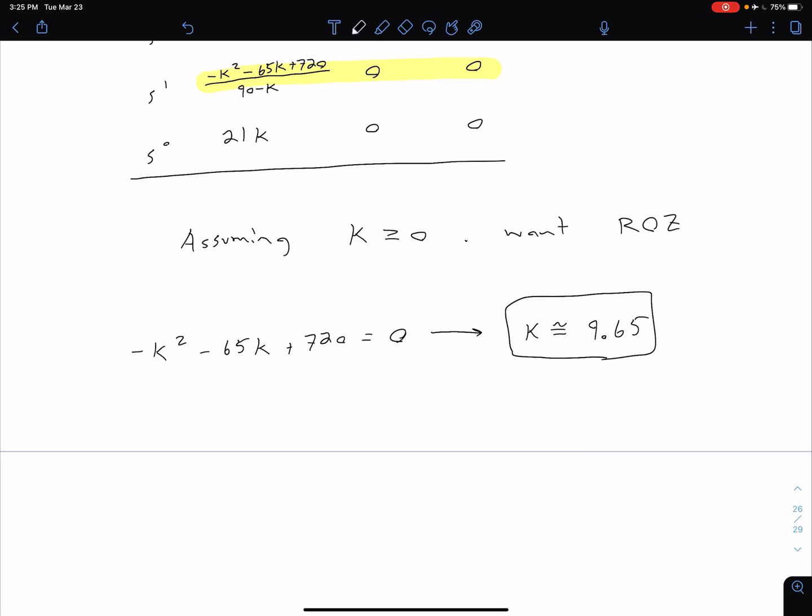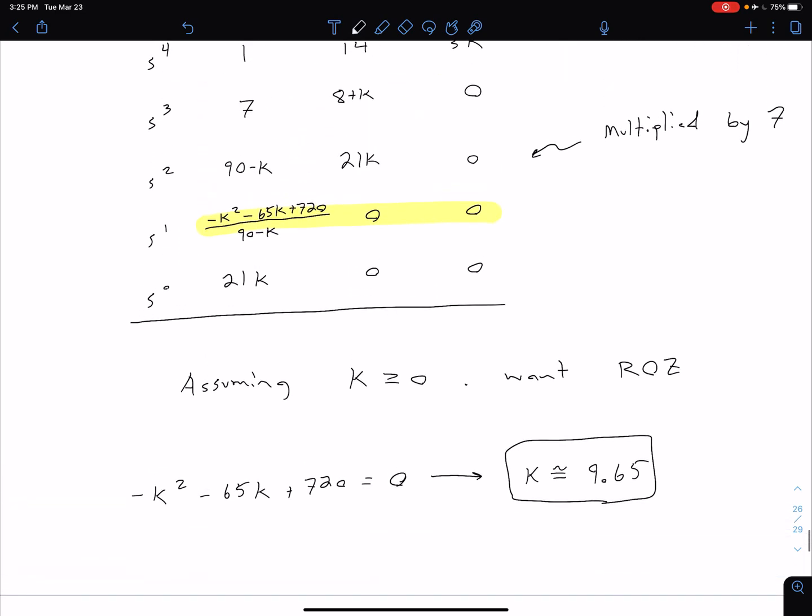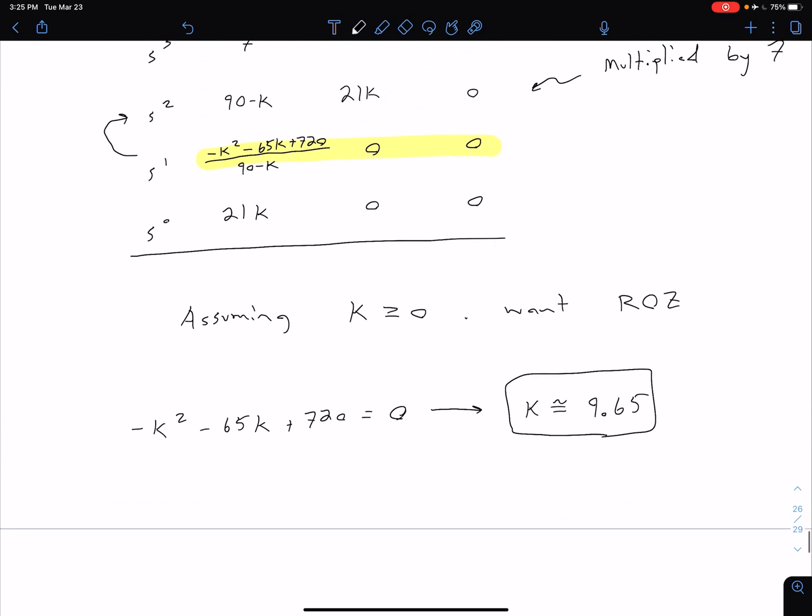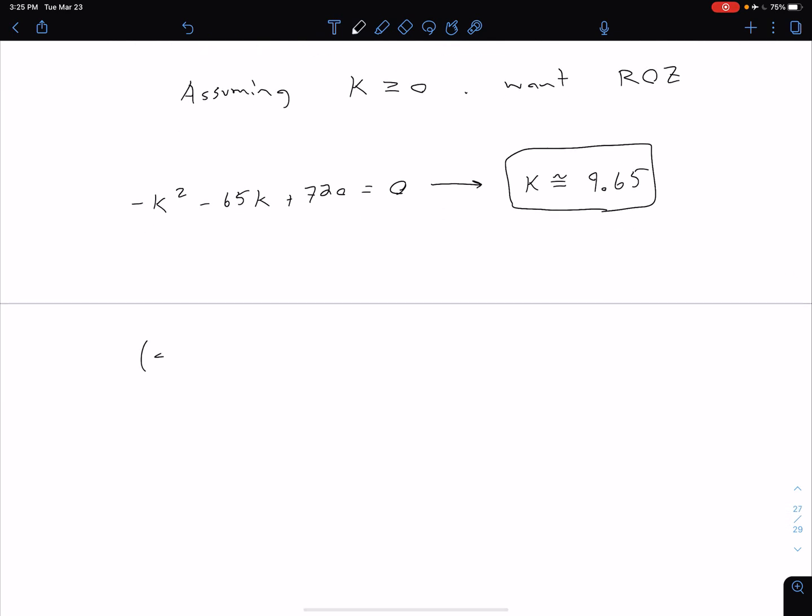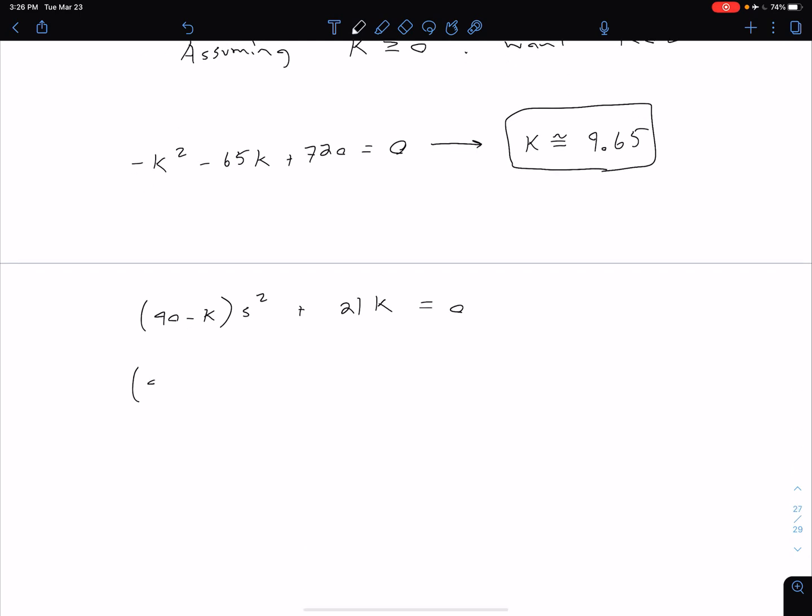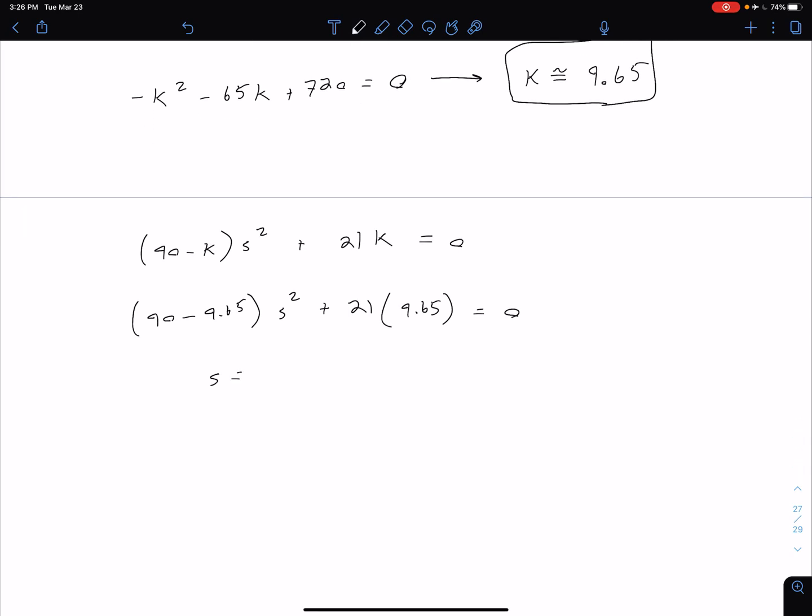Now if we want to figure out the frequency of oscillation omega, what we talked about doing in the previous video is we go to the row above the row of zeros that we created, and we plug in that K value. Going to that row above, we have 90 minus K times s squared plus 21K, and we set that equal to zero. We're just plugging in that 9.65, so we have 90 minus 9.65 times s squared plus 21 times 9.65, solve that for our s. We get that our s is equal to approximately plus or minus j 1.59.